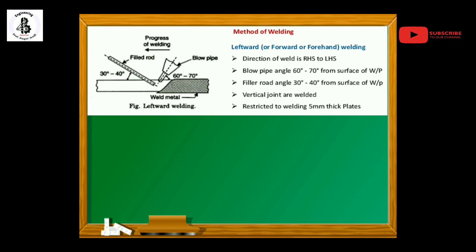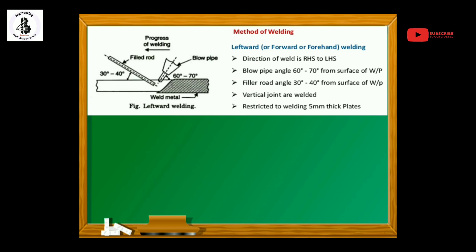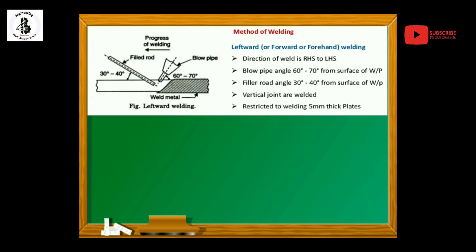With the leftward welding process, vertical joints are welded and it is restricted to plates up to 5 mm thick. That is all about the leftward welding technique.